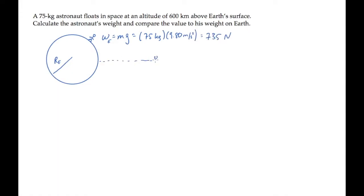When the astronaut is in orbit 600 kilometers above the surface of Earth, his weight, still the magnitude of gravitational force acting on him, is given by this expression.